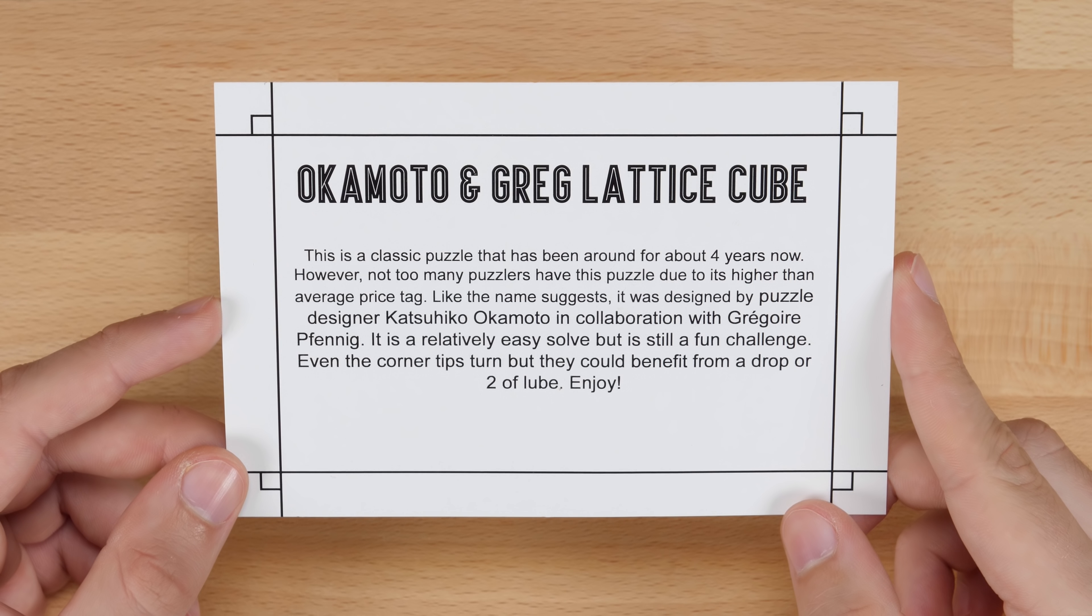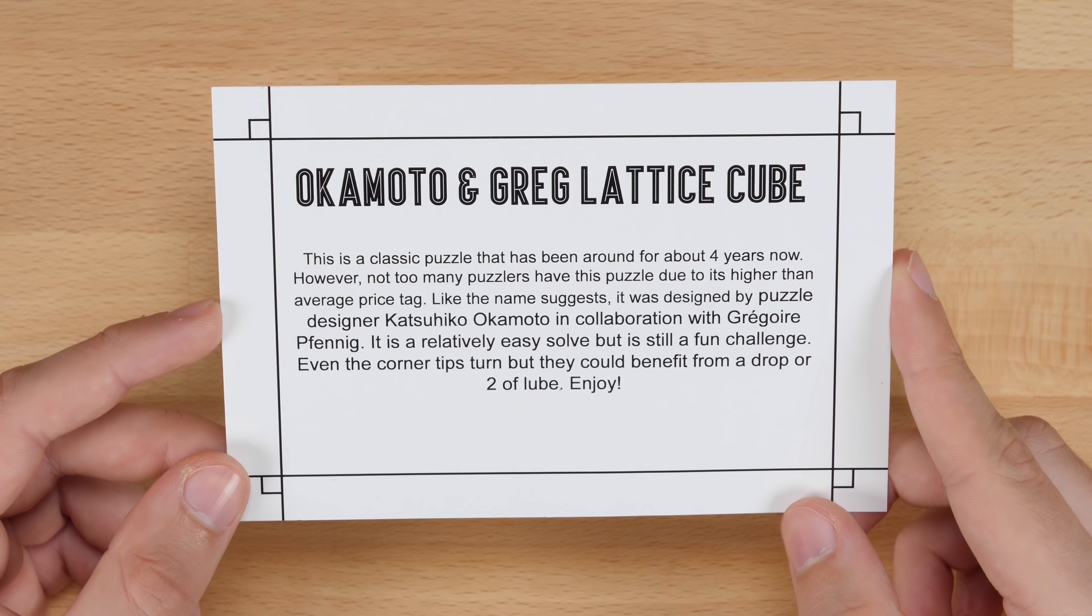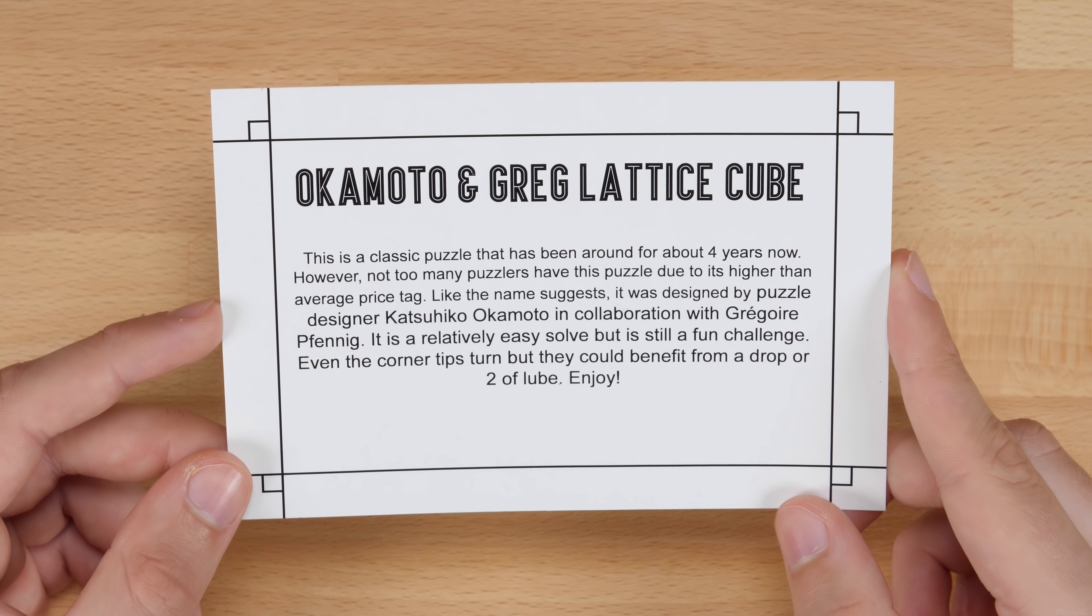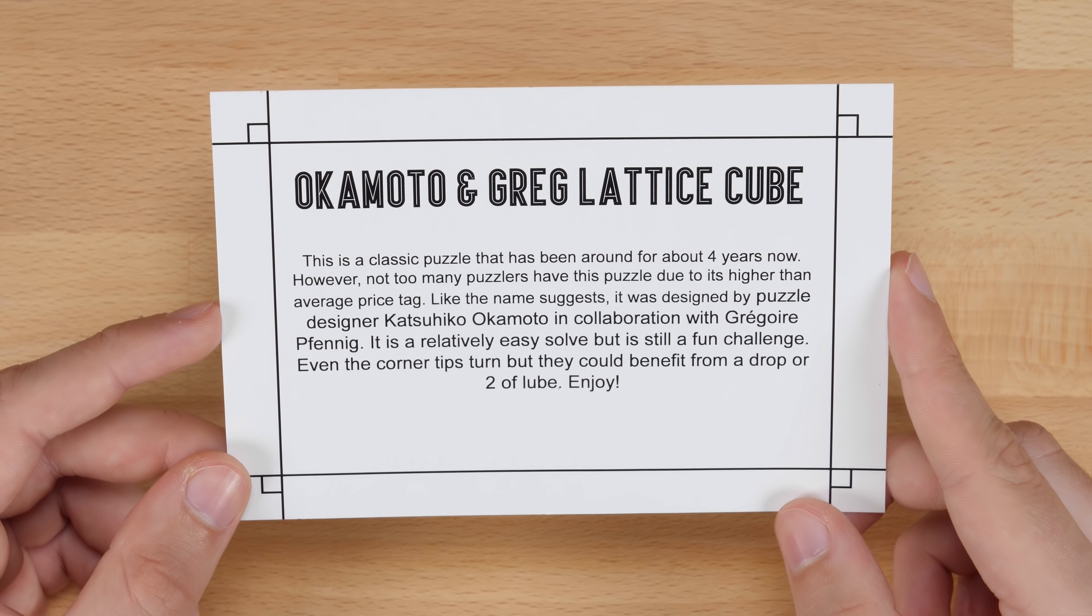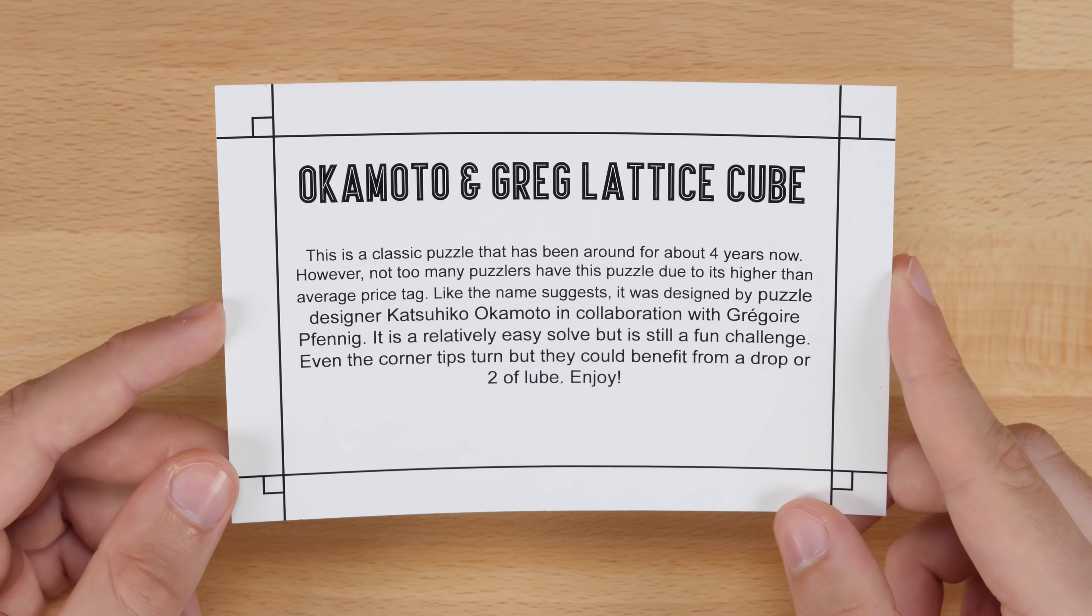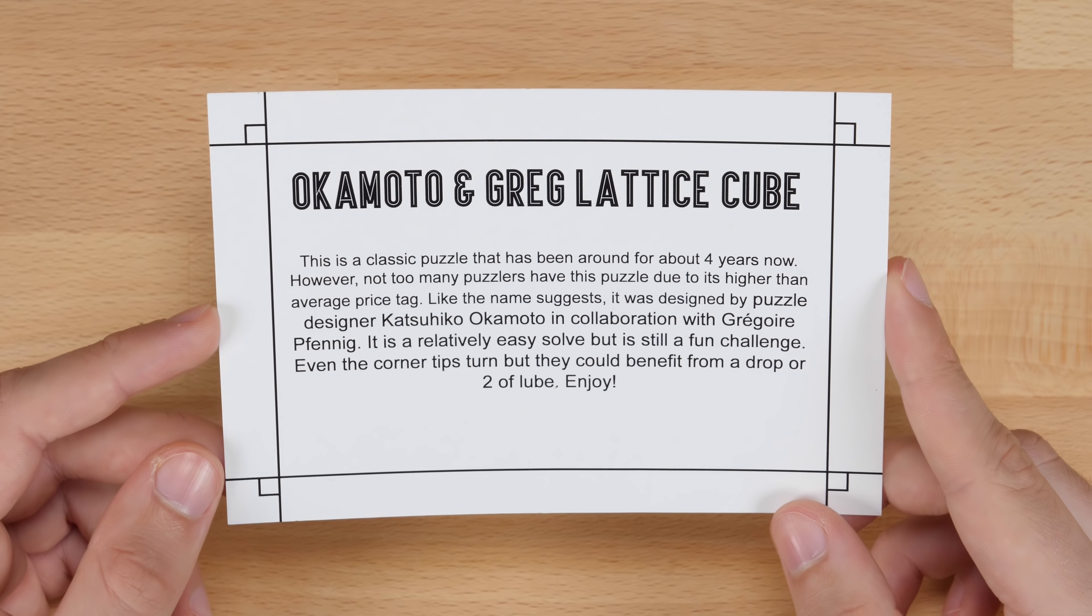So it says this is a classic puzzle that has been around for about four years now. However, not too many puzzlers have this puzzle due to its higher than average price tag. Like the name suggests, it was designed by puzzle designer Katsuiko Akimoto in collaboration with Gregoire Fenning. It is relatively easy to solve, but it's still a fun challenge. Even the corner tips turn, but they could benefit from a drop or two of lube. Enjoy.